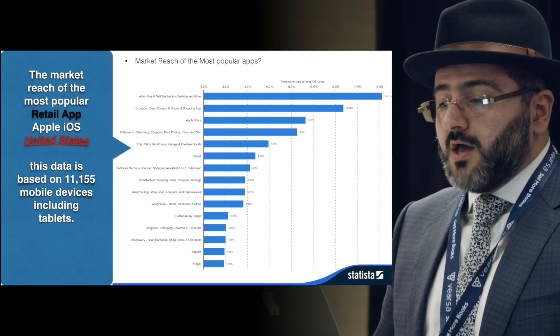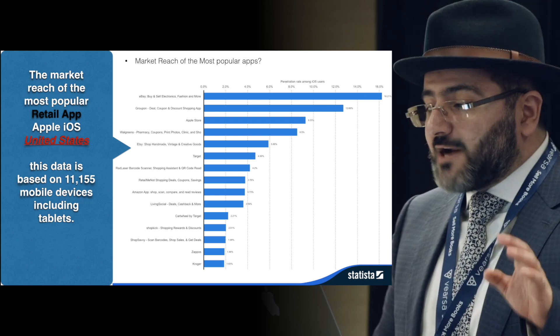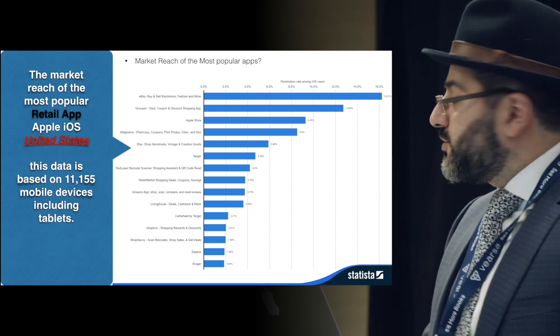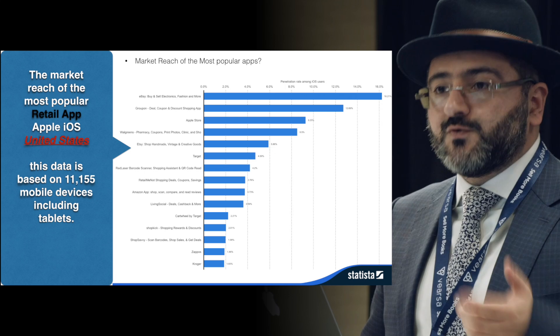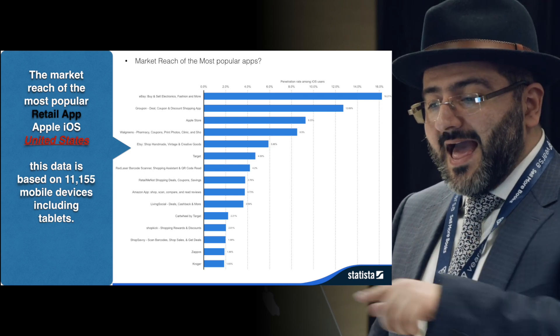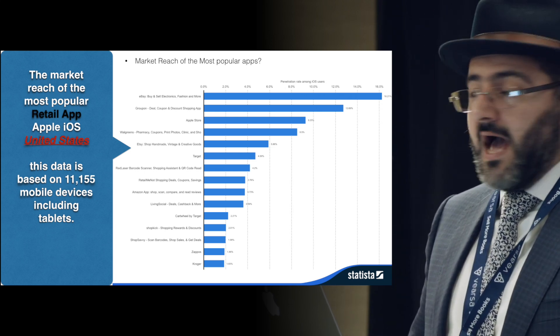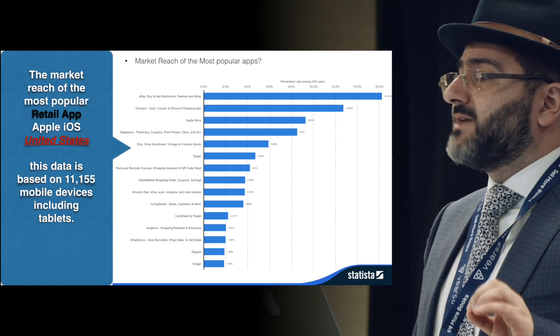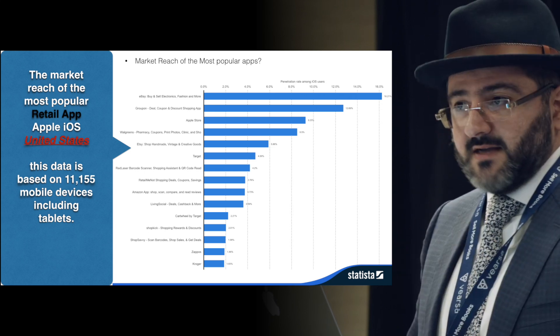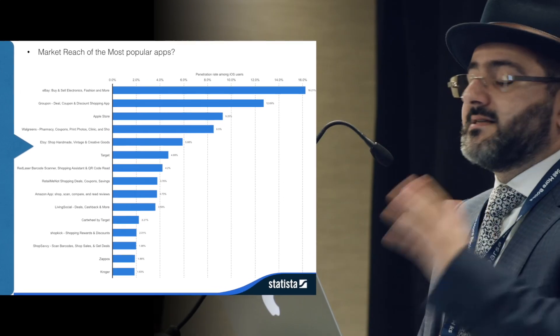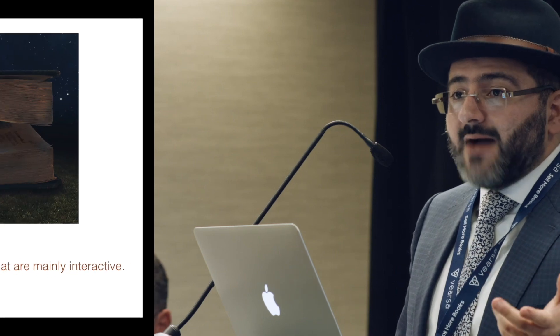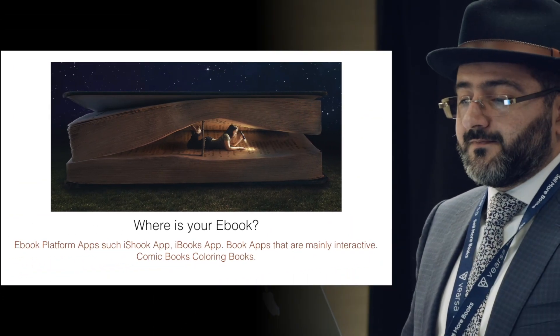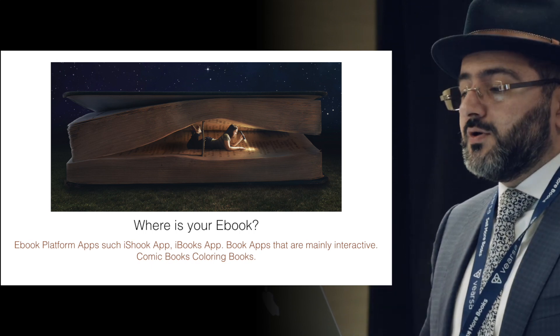The market reach of the most popular retail apps is eBay, Groupon, and the Apple Store — the actual percentage of reach is only 16%. If you're thinking you'll sell books through your Amazon account on mobile, it'll be very difficult, because Amazon is only at 3% market reach on mobile devices. According to Statista, over 50% of people now use mobile devices over desktop devices, meaning people are not using the desktop as they used to.